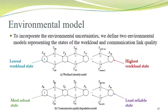We also introduce an environmental model to incorporate environmental uncertainties. We define two environmental models representing the state of the workload and communication link quality. The top part of the figure shows the workload intensity model and the bottom part shows the communication quality model. The leftmost place represents the lowest workload state and the rightmost place represents the highest workload state. The leftmost place in the link model represents the least reliable state. This is a simple state transition model applicable as a general model.